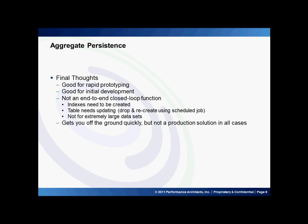Now for some final thoughts. Overall, this is good functionality for rapid prototyping and initial development. It's really not a closed-loop function in that it doesn't create indexes and won't do partitioning. It's really just a system that allows you to quickly model aggregates and, in some cases depending on the volume of data, allows you to use it even in a production scenario. Keep in mind that this is creating a table with aggregates in it, and that this table will need to be dropped and recreated as data changes. So ideally, you'll either need to create a job in OBIEE to continually recreate this table, or better yet, you'll be creating a job in Informatica or some other similar tool to populate this table. The bottom line is that it's a great tool — gets you off the ground quickly, gets your structures in place, saves you time in creating metadata, and is a little-known and little-used tool in OBIEE. Thank you for attending today's session on Aggregate Persistence.